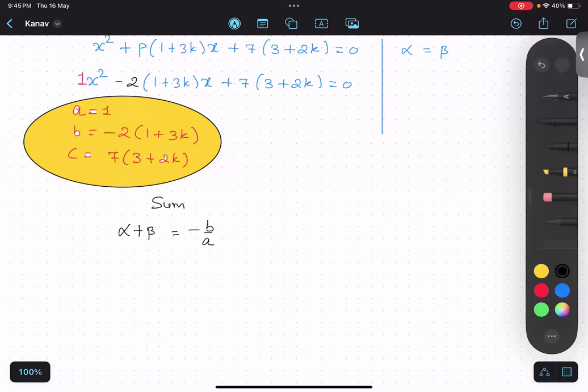Sum alpha plus beta equals to minus b by a. And alpha beta are equal. You want to keep in alpha or beta? You tell me. Alpha. So alpha plus alpha equals to minus b. Minus b is minus 2 bracket 1 plus 3k.